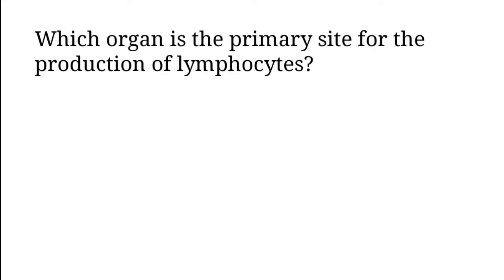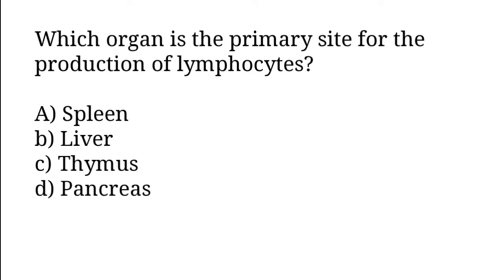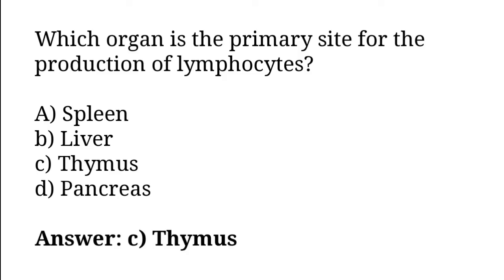Which organ is the primary site for the production of lymphocytes? Options: A) Spleen, B) Liver, C) Thymus, D) Pancreas. The correct answer is option C. Thymus organ is the primary site for the production of lymphocytes.